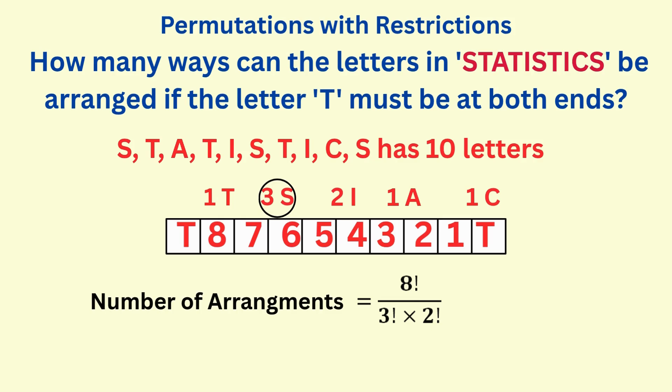And divide also by two factorial for the I, that's there twice. So we get 40,320 over 12, which gives us 3,360 unique arrangements.